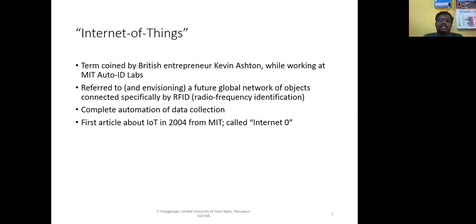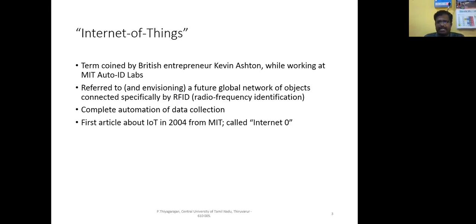The term Internet of Things was first coined by British entrepreneur and researcher Kevin Ashton at MIT labs. He envisioned that IoT is going to change the 21st century with its capabilities. He said IoT will produce lots and lots of data where devices communicate among themselves, so data should be gathered. He was very sure this will change human life in a drastic way. The first paper on Internet of Things released by MIT lab was named Internet 0.